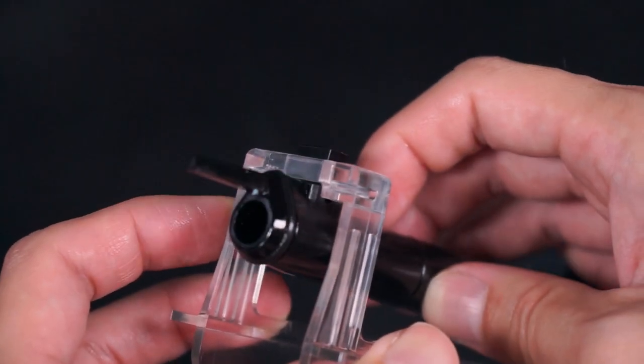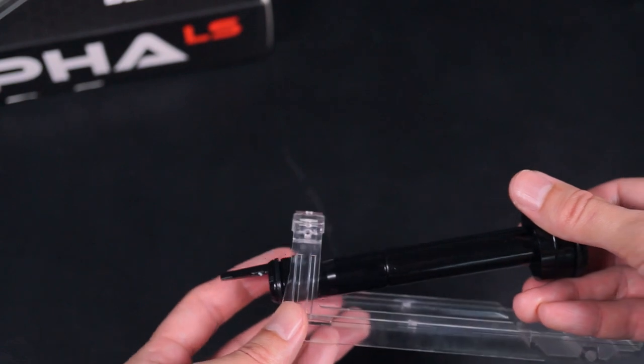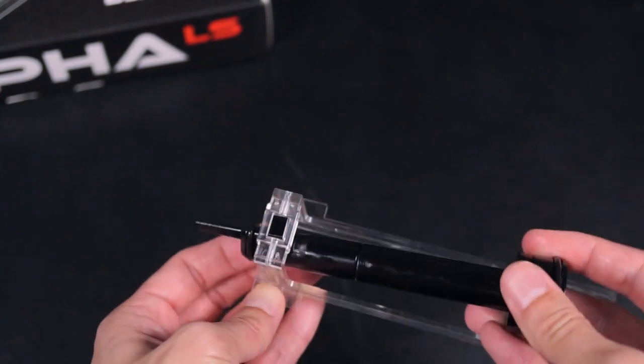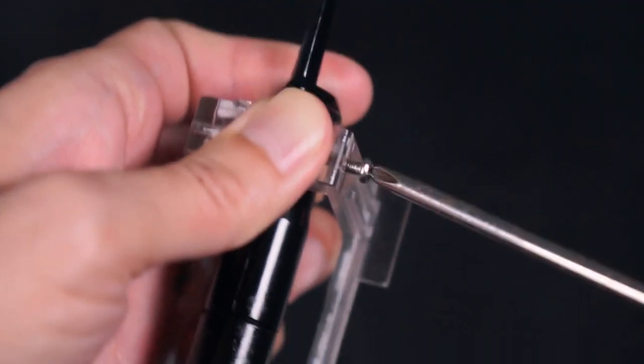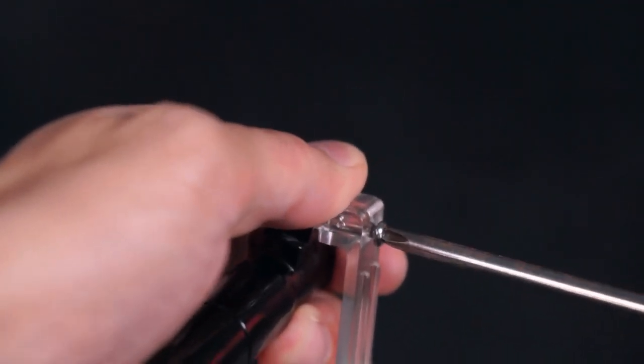Next, attach the pusher assembly to the bolt slat. Take note to place in the pusher assembly at an angle for easier installation. Secure the plunger assembly to the bolt slat by fastening with the bolt screw provided.